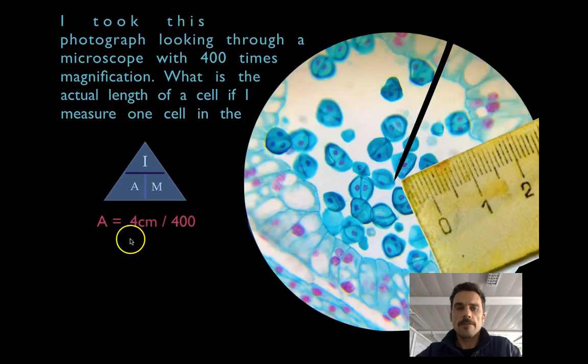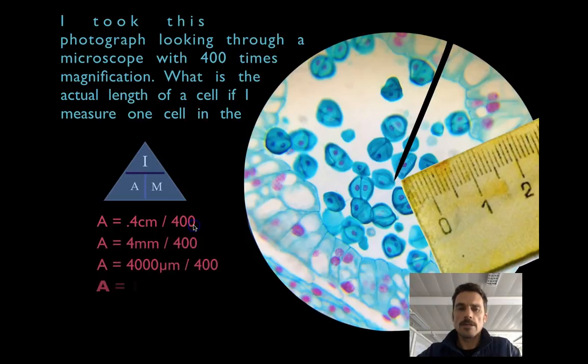So I can find out the actual size by going A equals I over M. Here's my image, 0.4 centimeters over 400 times magnification. And I work it out. And I should end up with about 10 micrometers across for one of these cells.